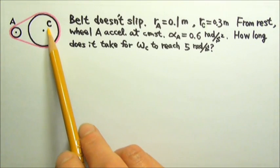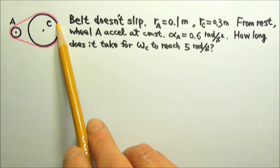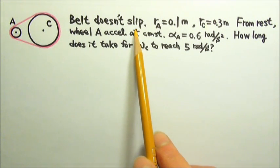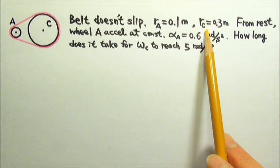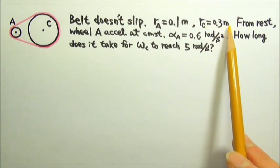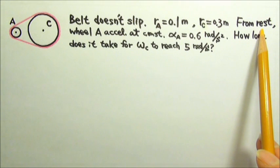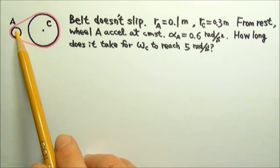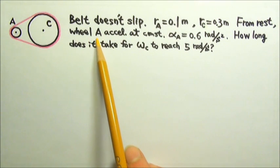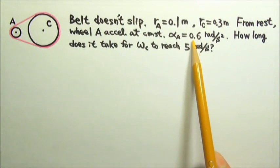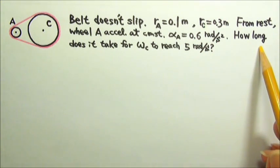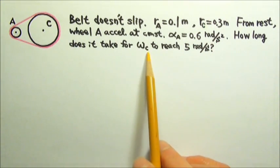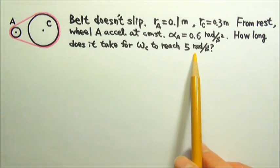Two wheels, A and C, are looped together by a belt. The belt does not slip. Wheel A has a radius of 0.1 meters. Wheel C has a radius of 0.3 meters. Both wheels are initially at rest when the motor connected to wheel A's axle is turned on. The motor provides wheel A a constant angular acceleration, 0.6 radians per second squared. How long would it take for wheel C to reach an angular speed of 5 radians per second?